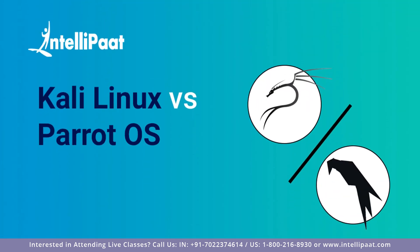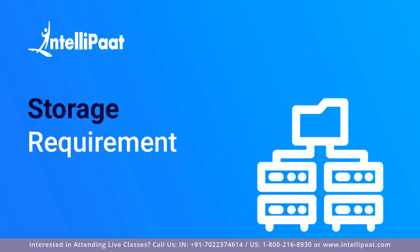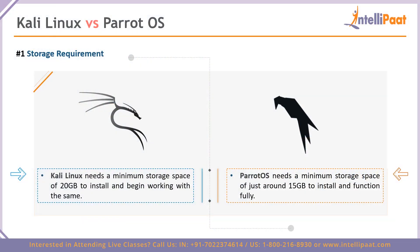This brings us to the comparison between Kali Linux and Parrot OS. The first comparison point is storage requirement. Kali Linux needs a minimum storage space of around 20 gigabytes to install and begin working. Parrot OS seems like a winner here, requiring only around 15 gigabytes to install and function fully. You might think 20 or 15 gigabytes isn't a lot, but when you're working with legacy hardware, that five gigabytes of storage might make all the difference.